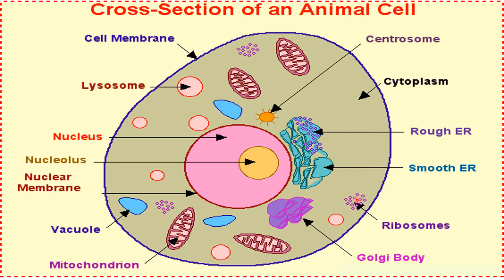The ribosomes are tiny structures that are scattered in the cytoplasm. They are associated with protein synthesis. The Golgi bodies are flat membranous sac-like structures that are found mostly near the nucleus. They secrete substances such as enzymes and proteins.